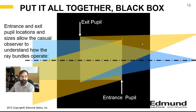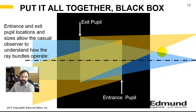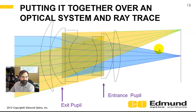Let's put it all together. Here's a black box with a virtual entrance pupil and a virtual exit pupil. You can see how the input beams come in and the output beams go out. This characterizes the footprints in your optical system. Overlaying this on top of the ray trace, you can see where the entrance and exit pupils are located.